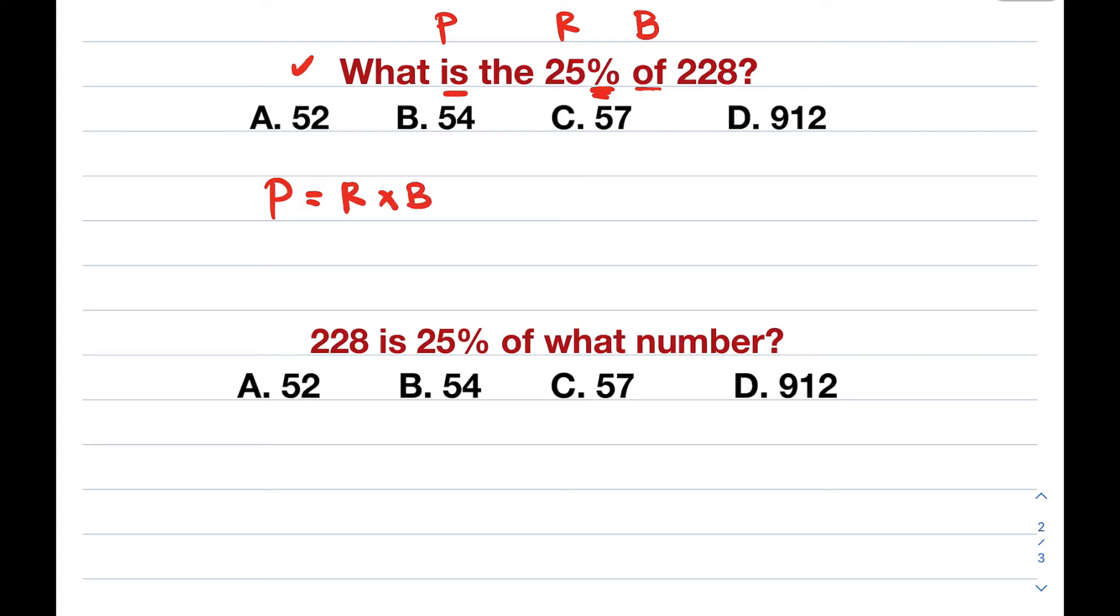So let's start with number one: What is 25% of 228? Let's identify which one is the percentage, base, and rate. What is? So we're looking for the smaller number. The 'is' means that's the percentage. Meaning, we know that the percentage is missing. Now, what is the 25%? Whenever we see the percentage symbol or decimal, automatically guys, that is your rate. Many people get confused about the percentage and rate, but this is your clue: if there's a percent symbol, automatically, that is your rate. Then, of 228. Since 228 is incorporated with the word 'of', automatically, this is your base. Since the percentage is missing, what is our formula? The formula is simply: percentage is equal to rate times base.